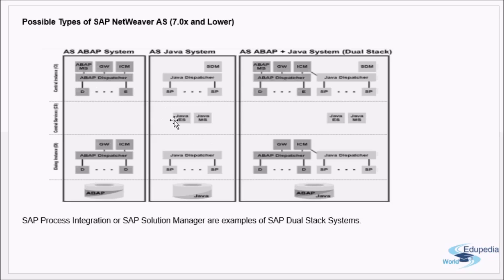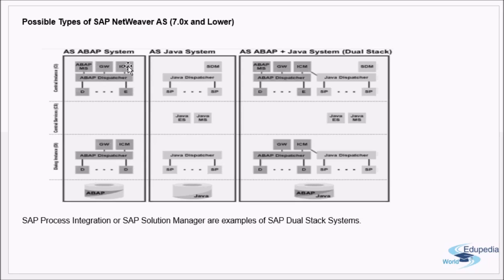For an SAP system there is only one message server, but each instance has its own gateway server and ICM, its own dispatcher, and all its work processes. There is only one database at the bottom. In summary for ABAP 7.0x and lower: one message server for the entire system, and every instance has a dispatcher, gateway, ICM, and different types of work processes.